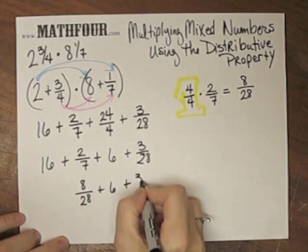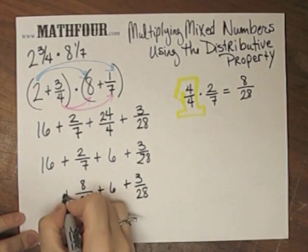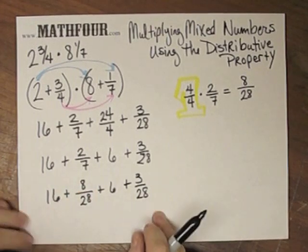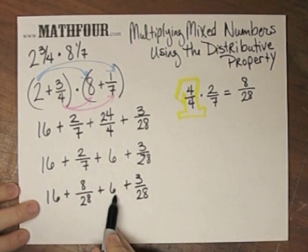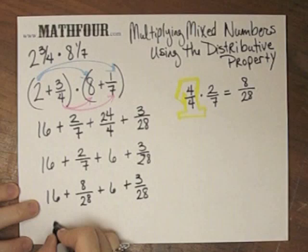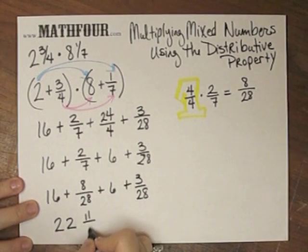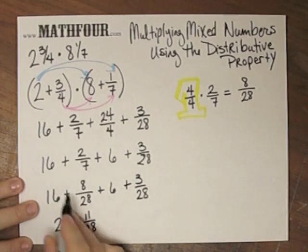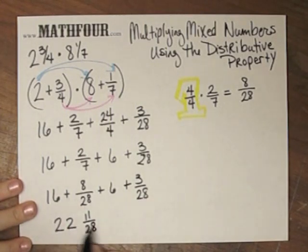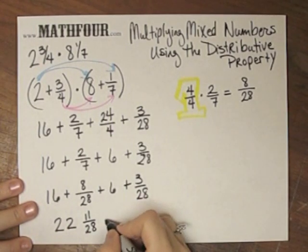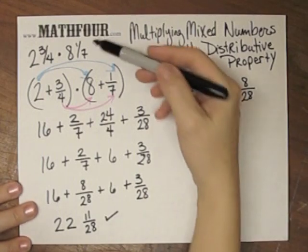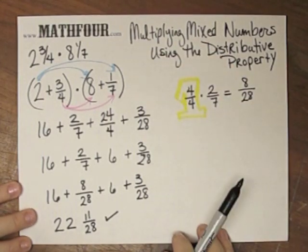So this is 8 over 28, plus 6 plus 3 over 28. Plus, don't forget the 16 hanging out over here. So I have 16 plus 6 is 22, and 8 plus 3 is 11 over 28. I can put the plus in there, but it's implied because this is a mixed number. And there I have my product of these two using the distributive property.